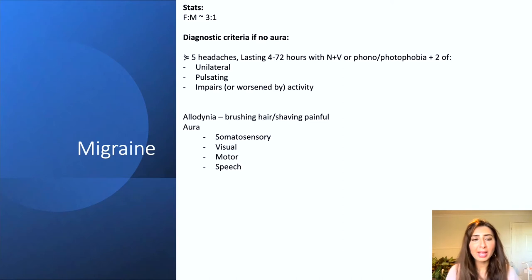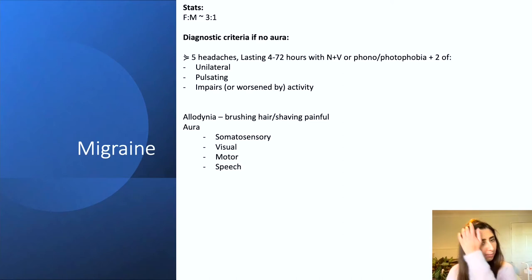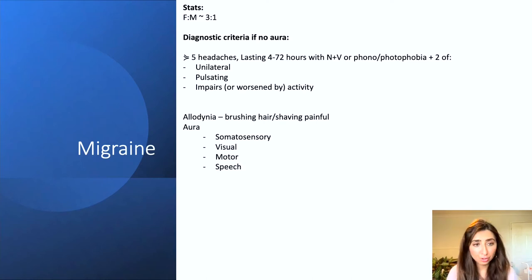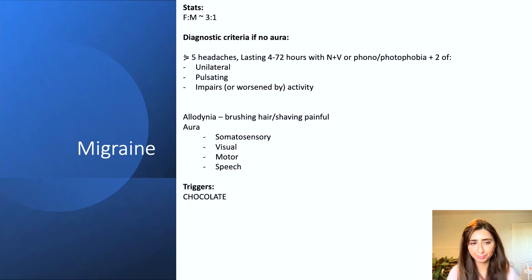Patients may also have aura, which is any type of abnormal sensation they may experience. This may be somatosensory, visual — which we see more commonly when we think of migraines — motor, or speech.